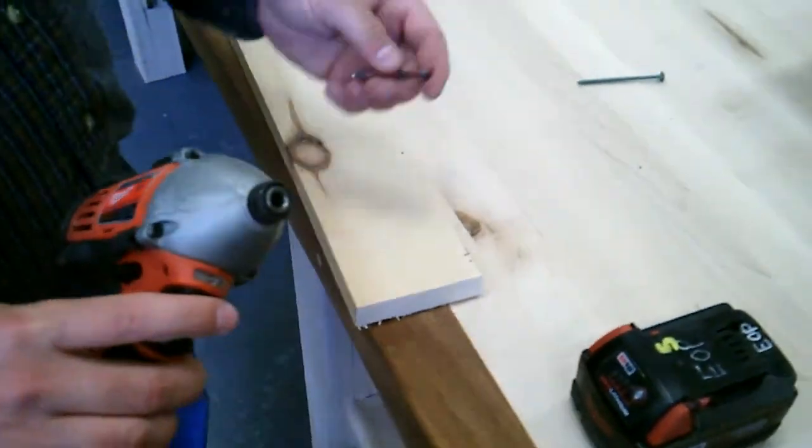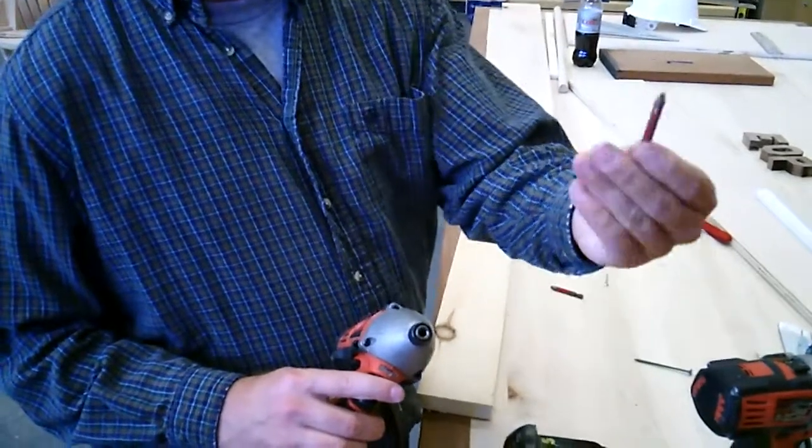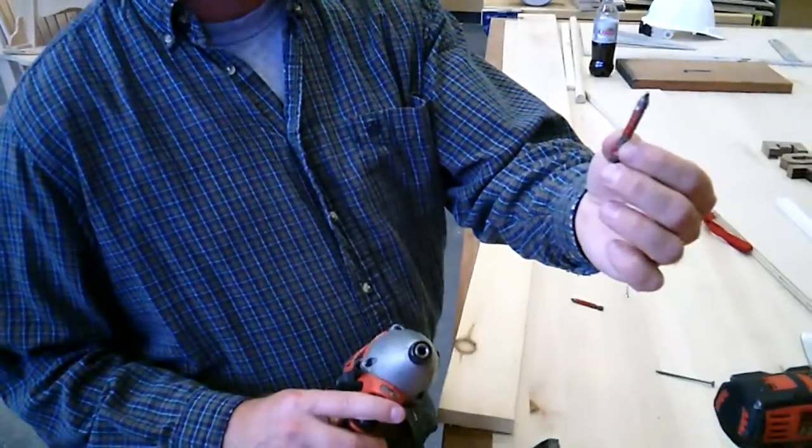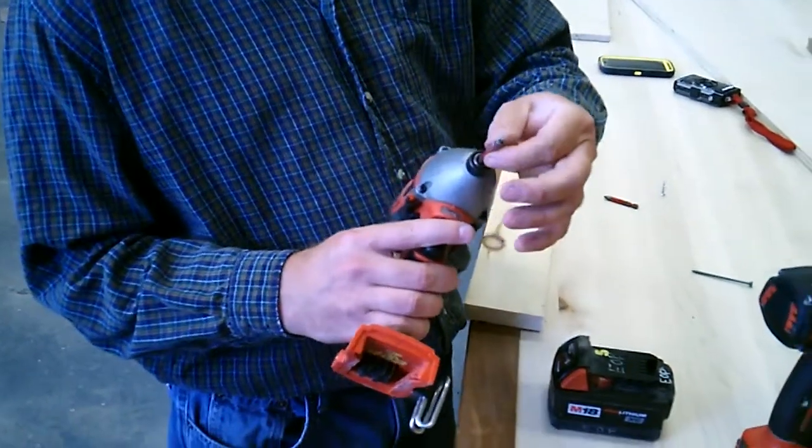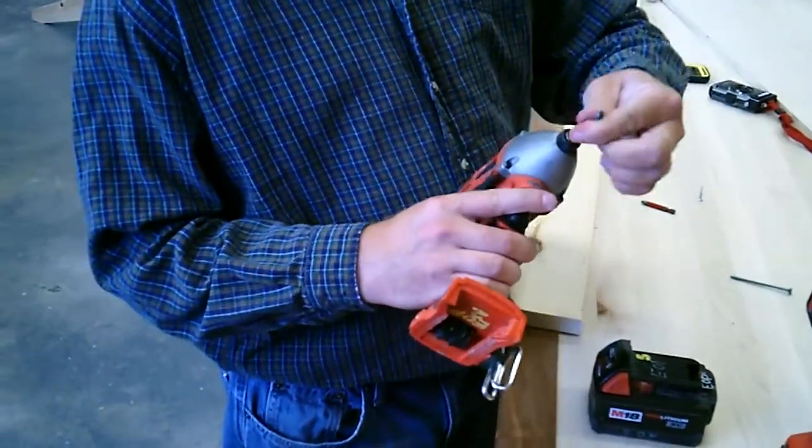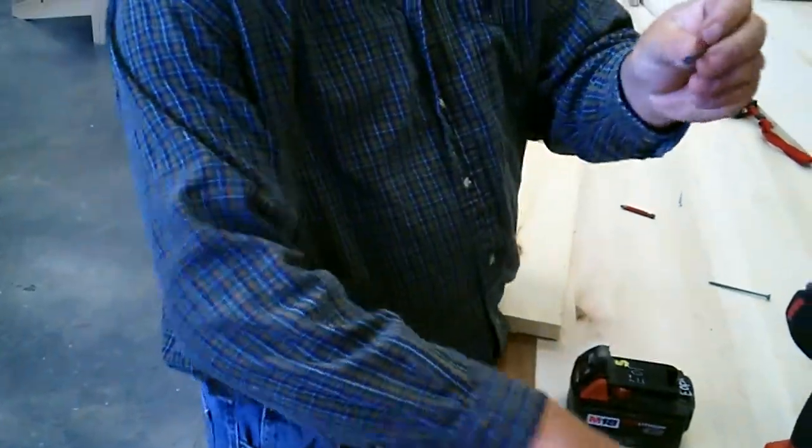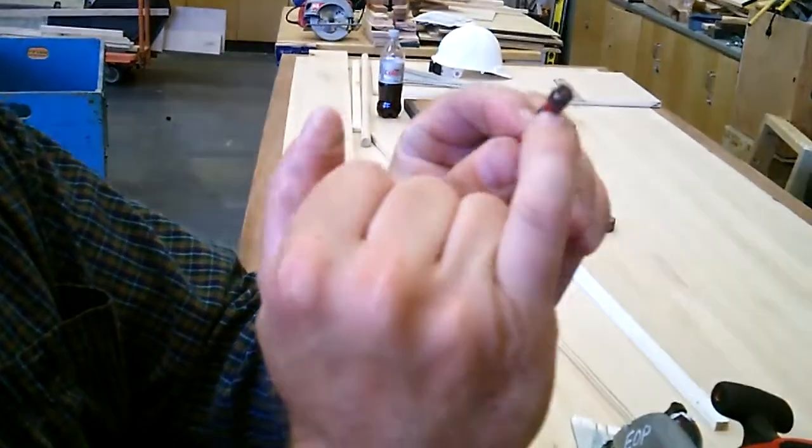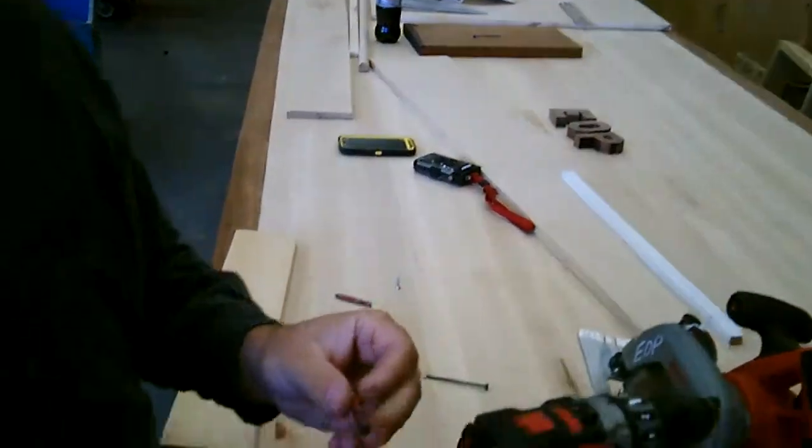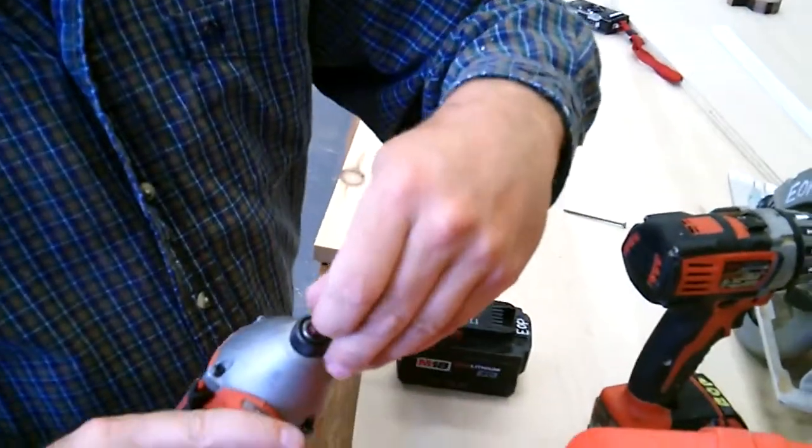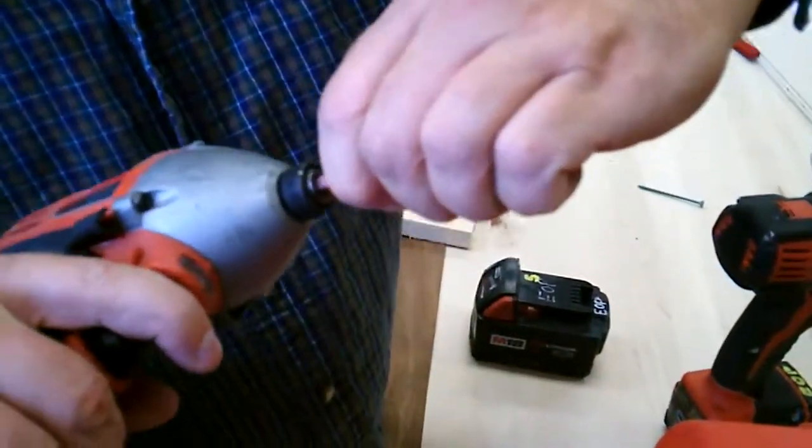It has a collet on the top to accept this red Robertson bit. In order for it to fit in, as you can see, if I were to just push it down, it falls out. But there's actually ball bearings that go all the way around the collet that lock in this little groove on the bit. So once it accepts it, you can't pull it out. As you can see, put it in, lift the collet, push it down, it can't come out.